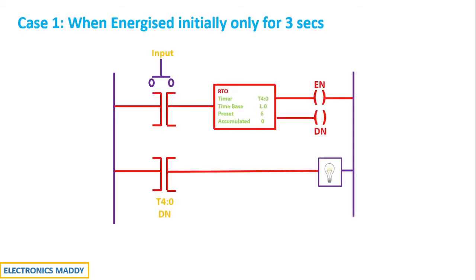Case 1. I am considering a typical example where an input is connected to the light load through a Retentive Timer which is represented as RTO. I will be energizing it only for 3 seconds. But the preset value of the timer is for 6 seconds. I am doing it purposefully. I will be energizing the timer by pressing the push button switch.